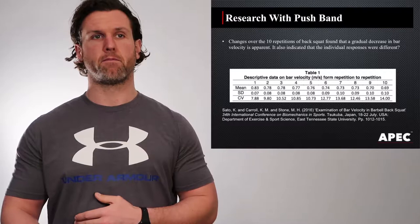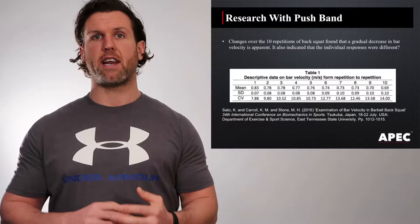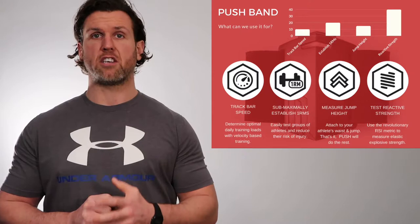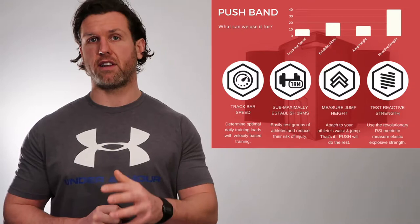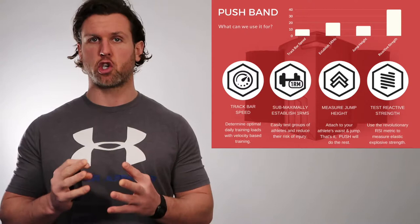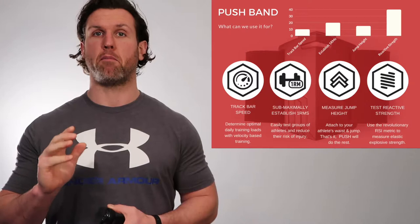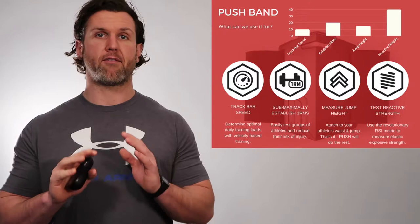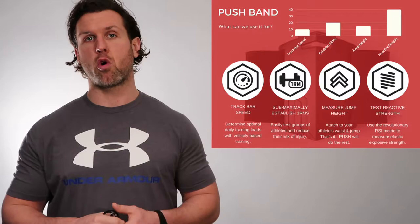When it comes to velocity-based training in the gym, we like to monitor our athletes. A good way to monitor your athletes is with an accelerometer. There are many tools out there — linear transducers, fitter dimes. What we use is a PUSH band. A PUSH band is an accelerometer that tracks how fast in meters per second the athlete is traveling. From the literature, maximum power output is recorded at around 0.7 to 0.9 meters per second.